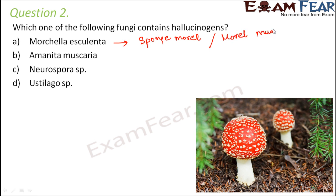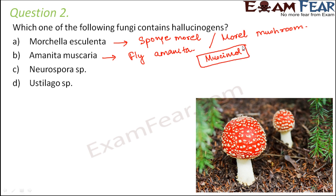The second option is Amanita muscaria, also known as fly amanita. This mushroom is known for its hallucinogenic properties because it contains a psychoactive constituent called muscimol, which affects the mental activity of a person. This would be our right option since the question asks about the fungi which contains a hallucinogen.